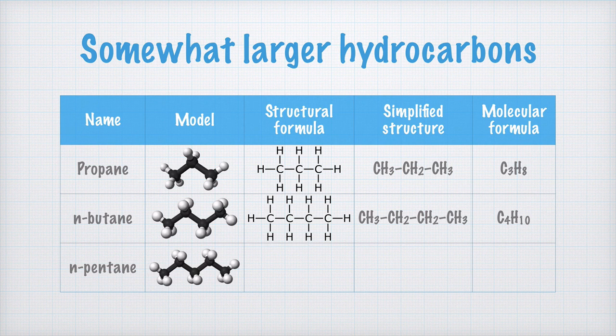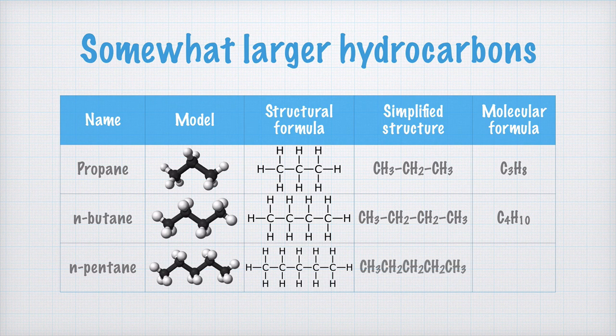From this model, we move on to the structure with five carbon atoms bound together, with hydrogen atoms bound to every carbon atom. I simplify the structure even more by removing the dashes between the atoms. The molecular formula for pentane is C5H12. So we have methane, ethane, propane, butane, and pentane so far.